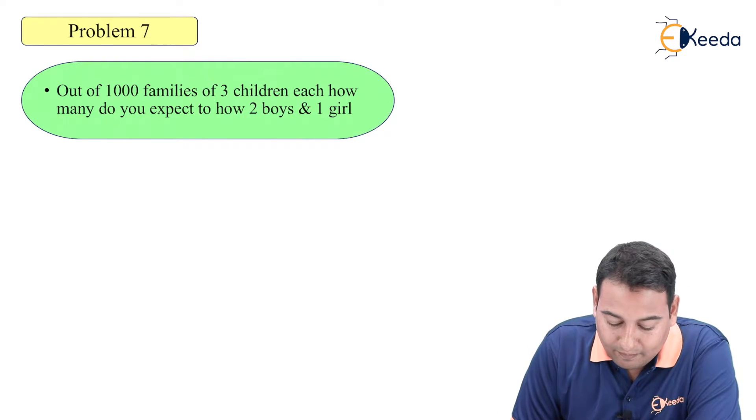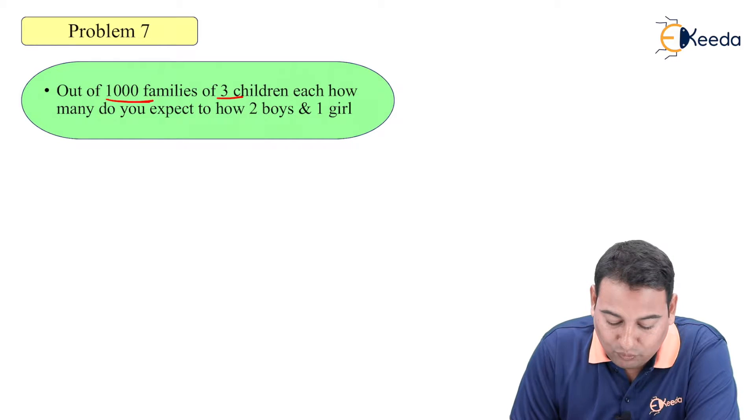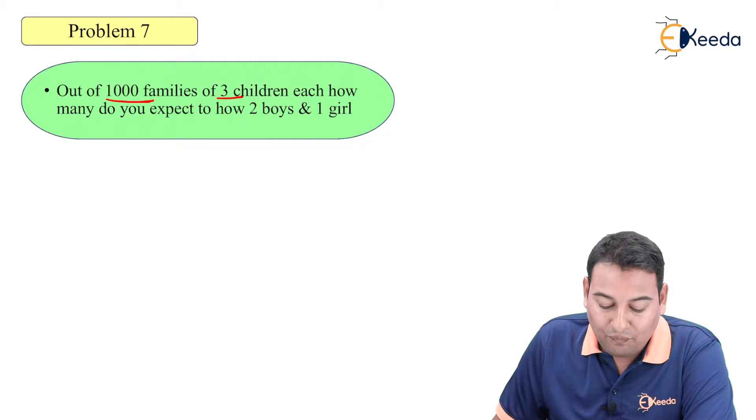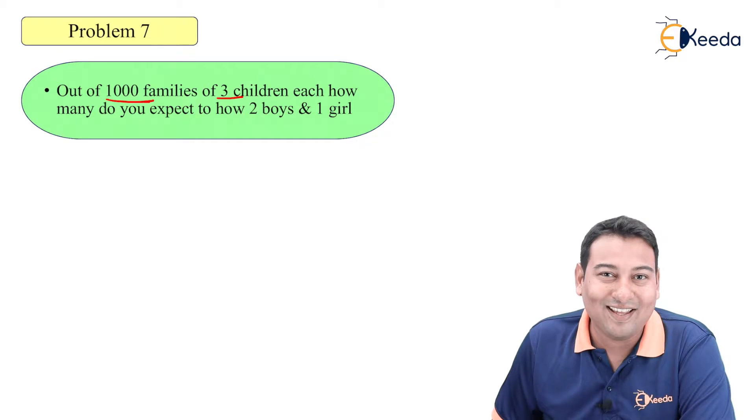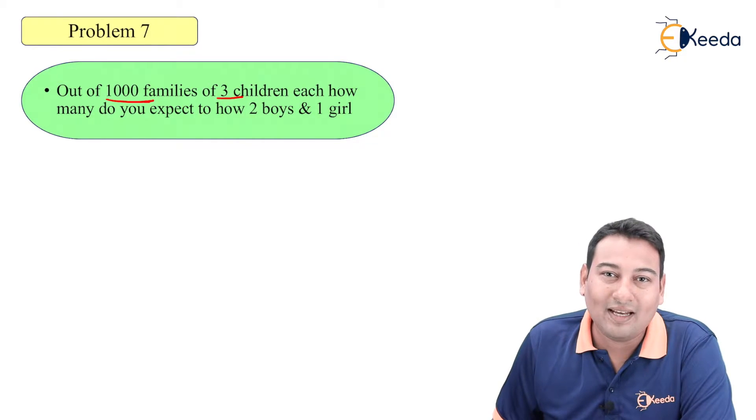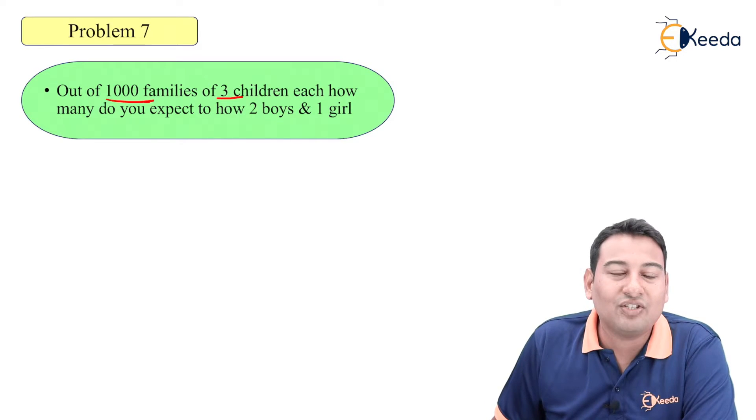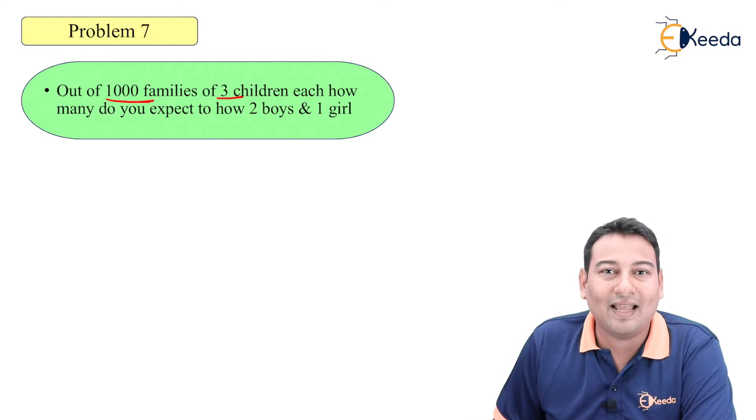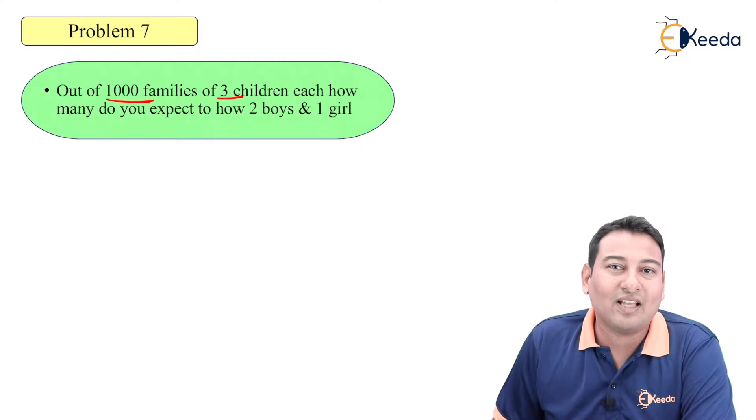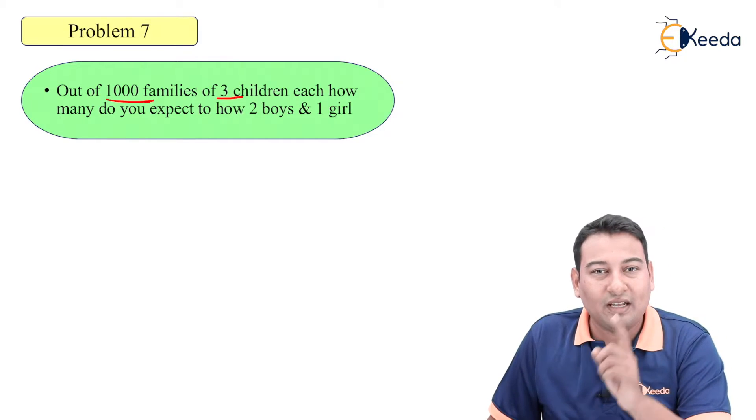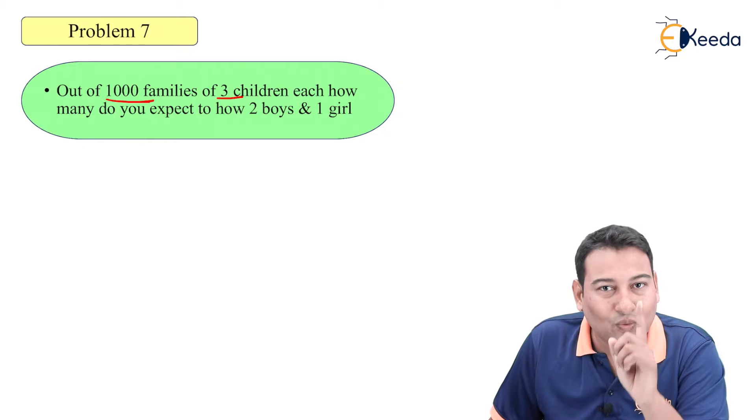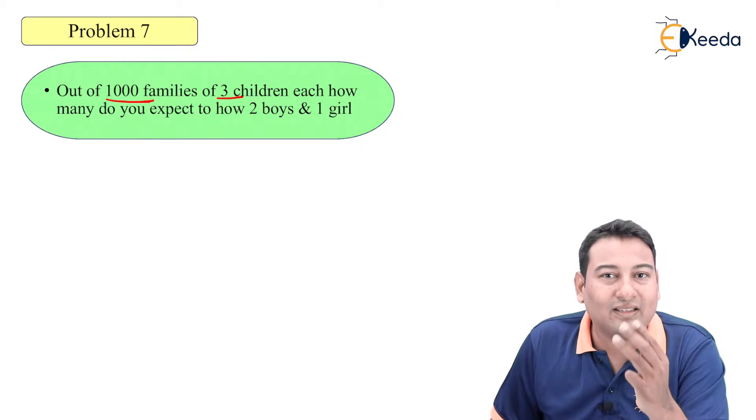Friends tell me which one is N? Out of 1000 families of 3 children each, here the concept of small n and capital N both are there. What is small n? Small n means number of trials in an experiment and capital N is number of times experiment is repeated. Here family is 1, so that is 1 experiment in that there are 3 children.